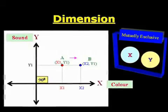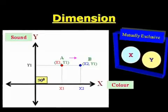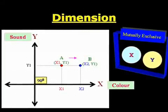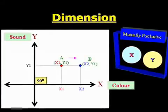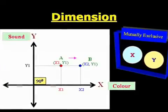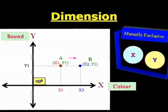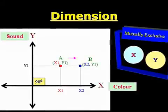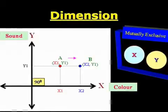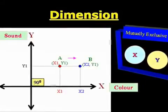If position A moves to position B by changing the x dimension from x1 to x2, the y dimension which is y1 does not change. Therefore, x and y dimensions are mutually exclusive. For example, we can consider color and sound as mutually exclusive dimensions.